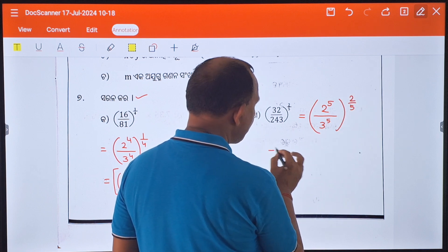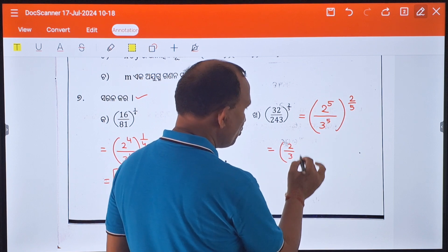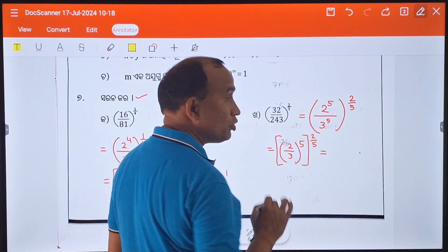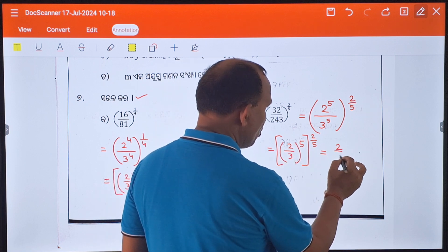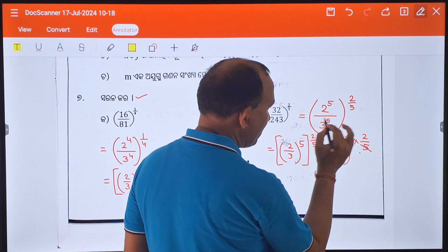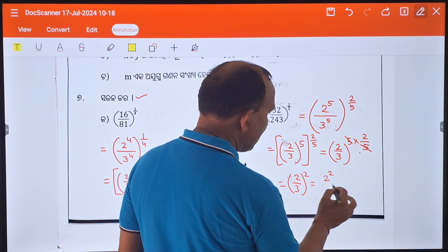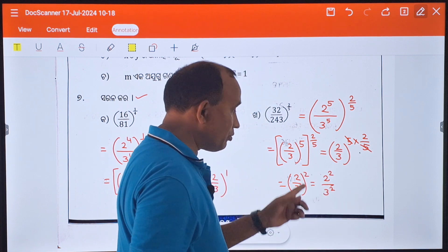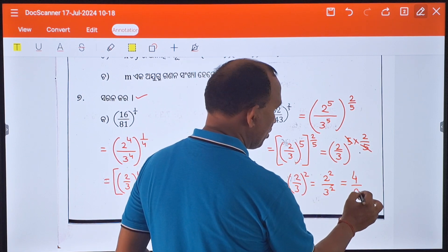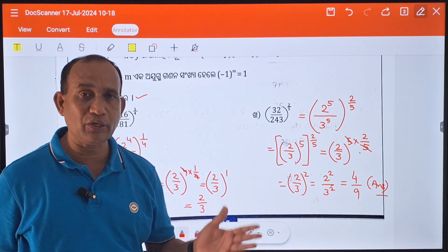2 by 3 divided by 3 square. So this is whole square, this is 2 square 4 and 3 square, so this is our answer.